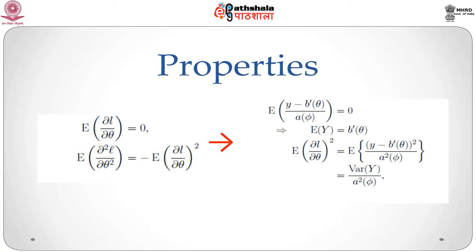Using the general regularity conditions — that the expectation of del l / del theta equals zero, and that the expectation of del²l / del theta² equals minus the expectation of (del l / del theta)² — we get that the expectation of y minus b'(theta) divided by a(phi) equals zero, implying expectation of y equals b'(theta). Similarly, the variance of y equals b''(theta) times a(phi), deriving the expressions for the mean and the variance given on the earlier slide.